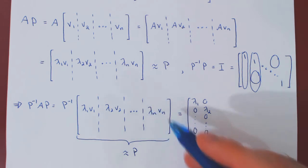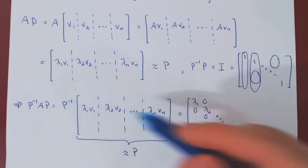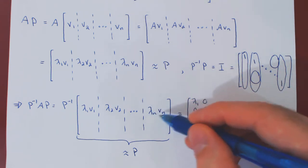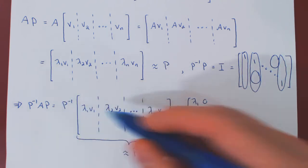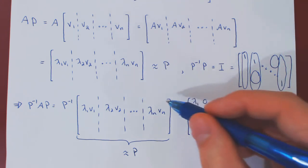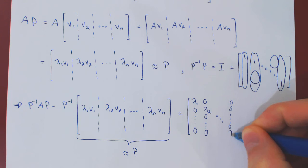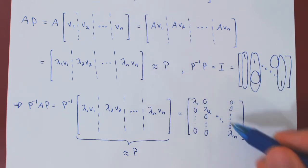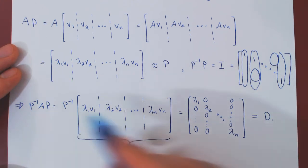The argument continues up to the nth column: P inverse times lambda n vn gives lambda n times the last column of I — zeros everywhere except the last entry, which is lambda n. This is exactly a diagonal matrix where along the main diagonal are the eigenvalues of matrix A. This is the matrix we called D. So this completes the proof, and indeed P inverse AP equals D.